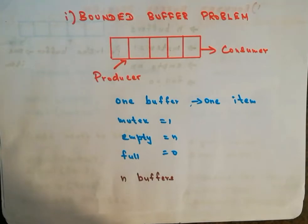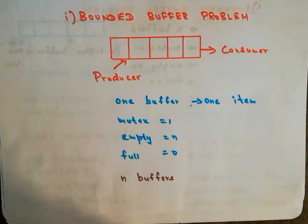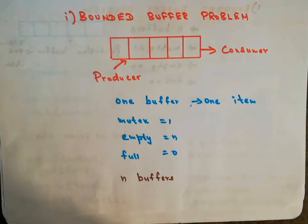When the compiler is producing items, the assembler should not be able to access the items at the same time. If they both try to access the item simultaneously, it may result in confusion or data inconsistency. So that has to be avoided.